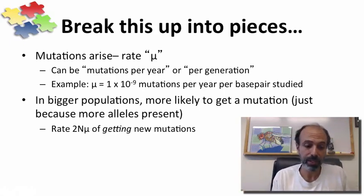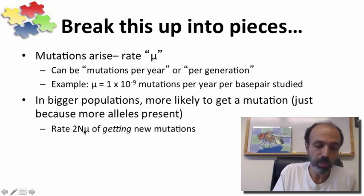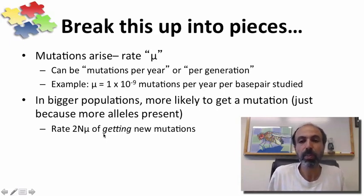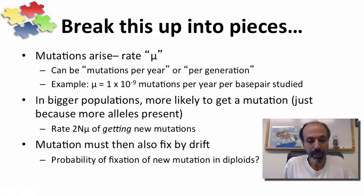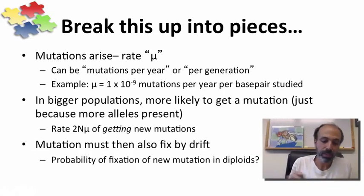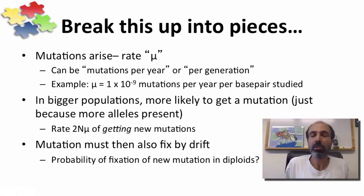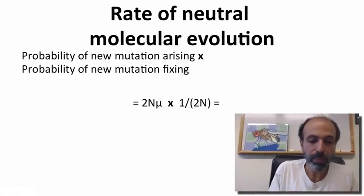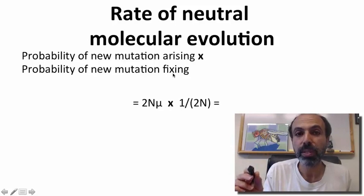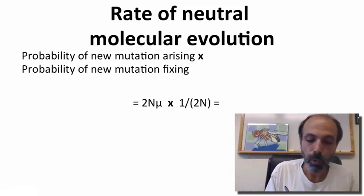The more chromosomes you have, the more chances that the mutation will arise. So the rate of getting a new mutation in a population might be 2N mu — where 2N is the number of chromosomes, N is the population size, and 2 accounts for diploidy. Every individual has two copies, and mu is the rate per chromosome per year per base pair. Now, the mutation must also fix by genetic drift — it has to go from its rare starting frequency all the way up to 100%. What is the probability of fixation of a new mutation in a diploid? We talked about the probability of fixation of alleles by genetic drift.